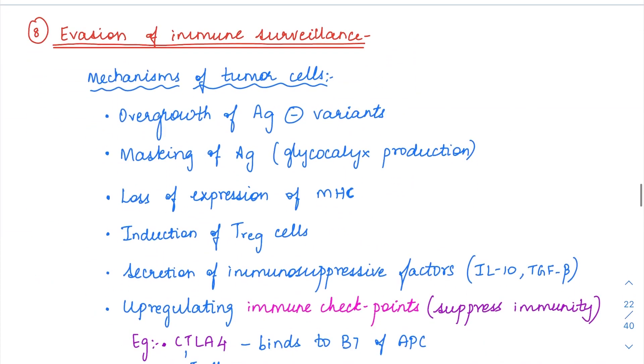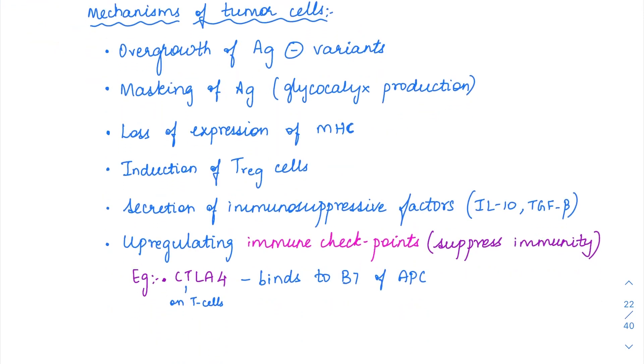Next hallmark is done. We will move on to evasion of immune surveillance. Normally a tumor cell is going to be killed by the cytotoxic CD8 T lymphocytes and also the NK cells. How do these tumor cells escape from the host cells and survive? They are going to adopt some mechanisms so that they can escape from the immune cells.